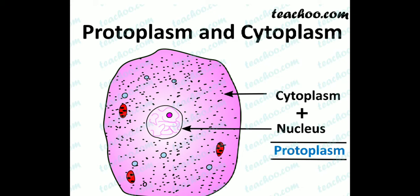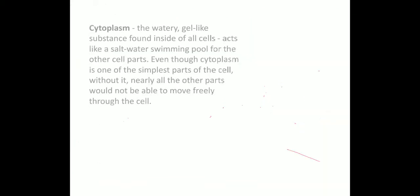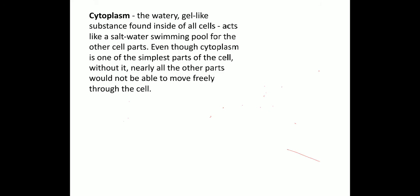Both cytoplasm and nucleus combined is called protoplasm. Protoplasm is actually a living matter. Now, what is cytoplasm? Cytoplasm is a watery, gel-like substance found inside all the cells. One cell comprises three things: first is the plasma membrane, second is the nucleus, and third is the cytoplasm.